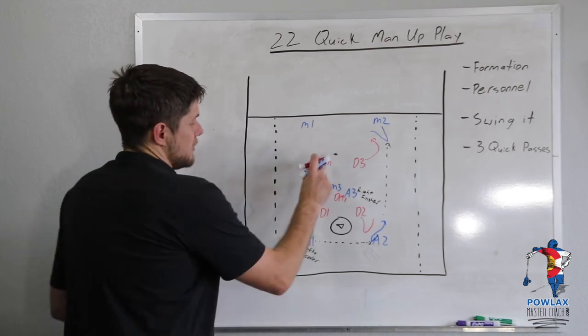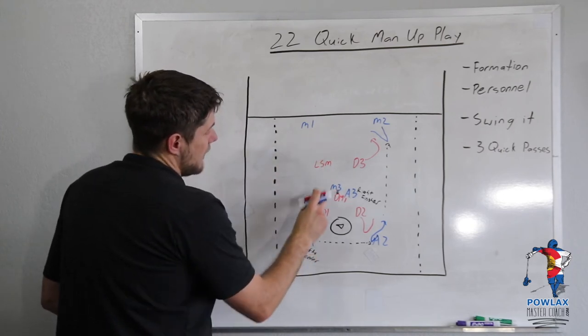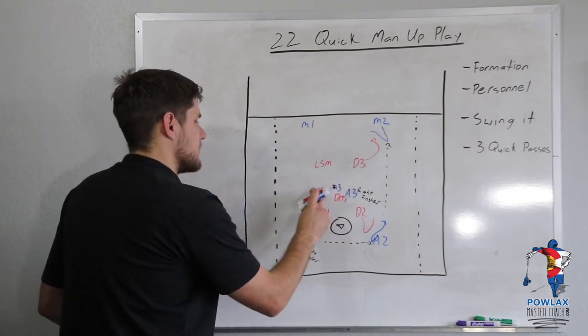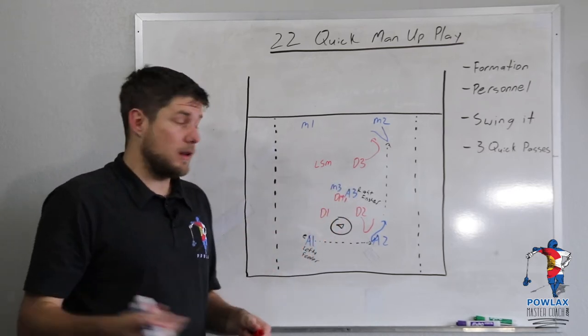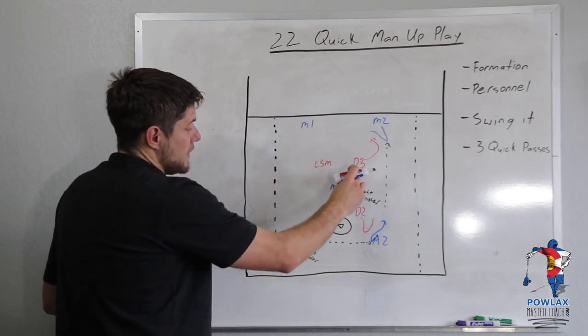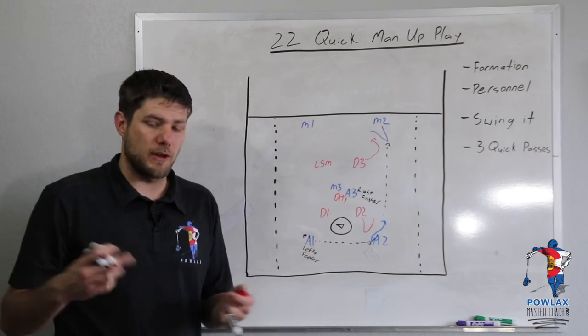Our objective is to draw the LSM out, pass down to the lefty feeder, have M3 seal off DM1 and have A3 come off of this pick. Now for all of that to work really well and to have the LSM not be able to come in and play him or D3 to come in and play him as he comes off of this, we have to move the ball very quickly.